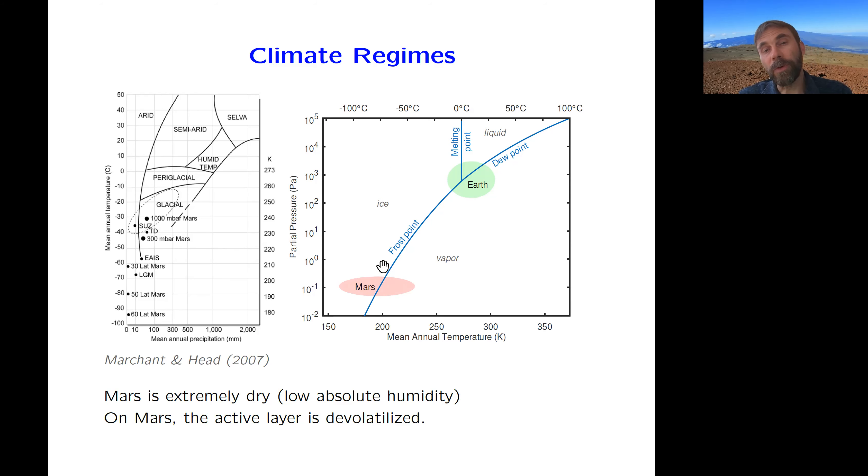And so on the right, there's a phase diagram of H2O with partial pressure on vertical axis. So not the total pressure, but partial pressure matters here. And the partial pressure on Mars is four orders of magnitude lower than on Earth. So on Earth, we can have sublimation, but most of the time we're just freezing and melting.